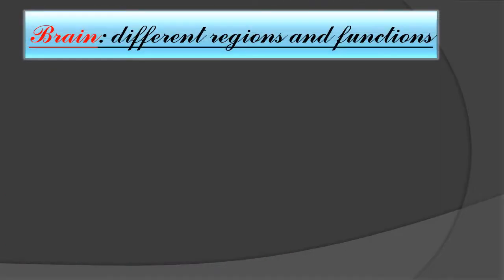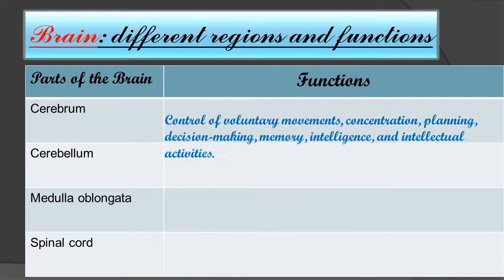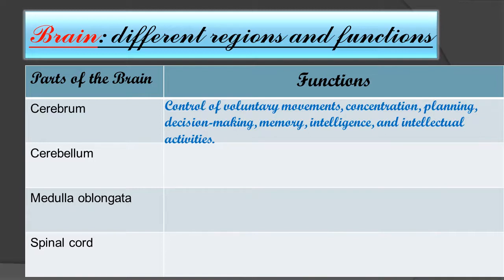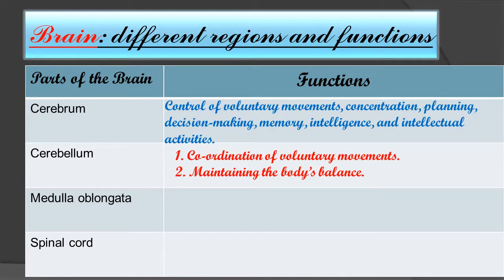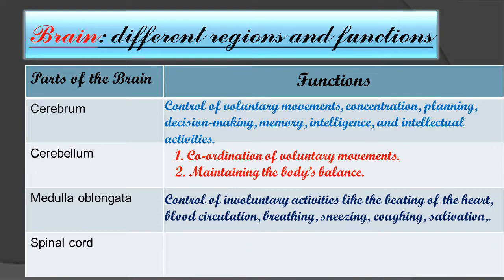Now let us understand the functions of different brain regions. The cerebrum controls voluntary movements — functions we can control by our own wish — as well as concentration, planning, decision making, memory, intelligence, and intellectual activities. The cerebellum coordinates voluntary movements and maintains the body's balance. The medulla oblongata controls involuntary activities — those we cannot control by will — such as beating of the heart, blood circulation, breathing, sneezing, coughing, and salivation.